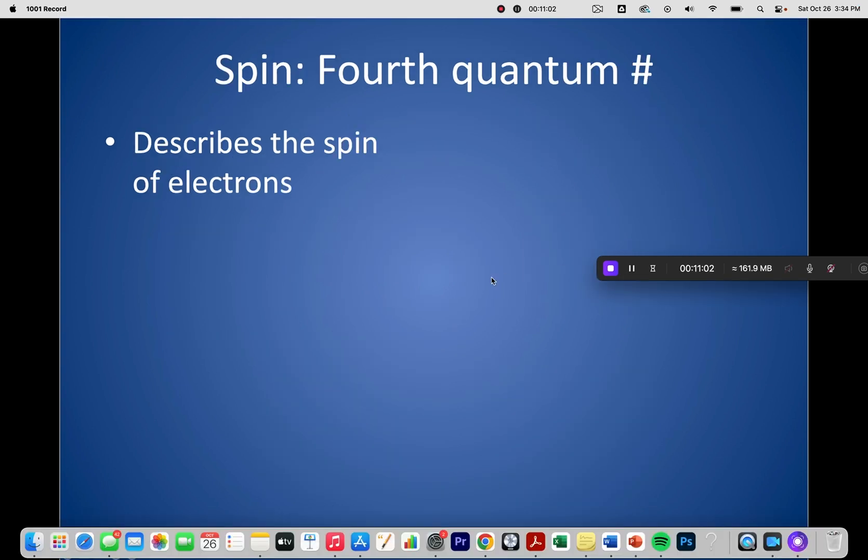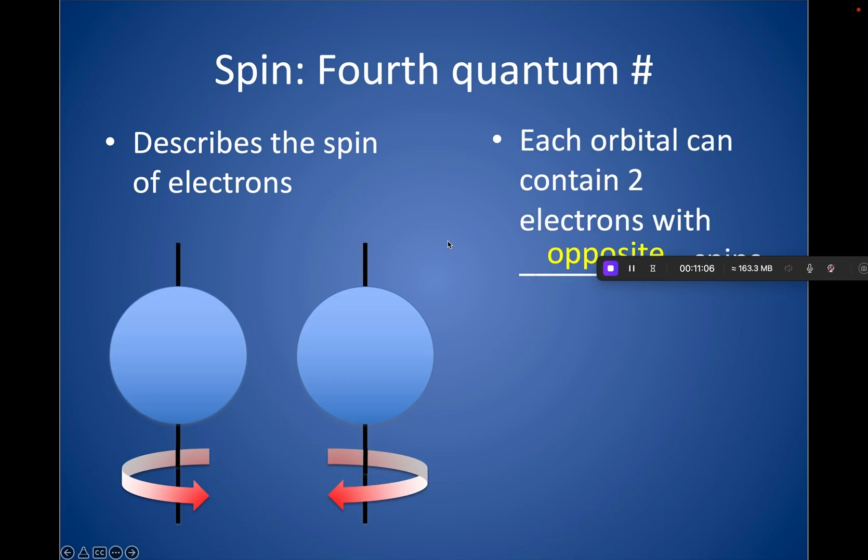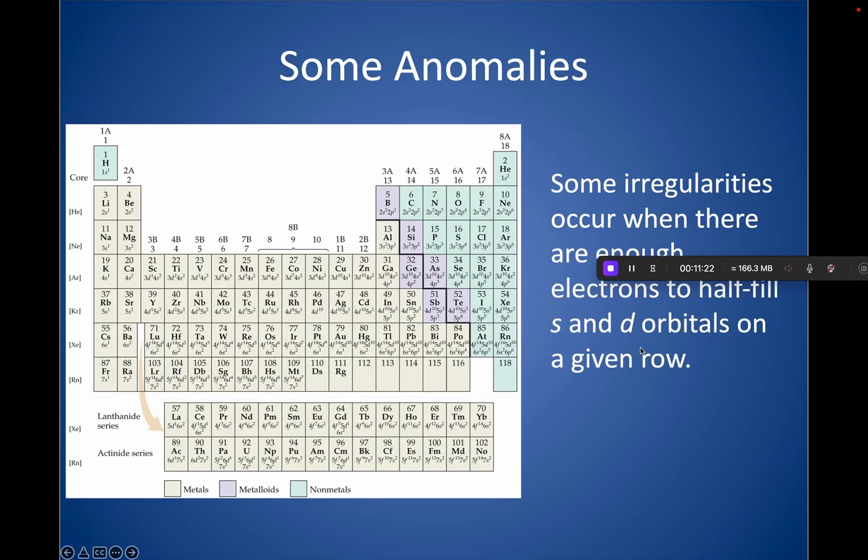The fourth quantum number describes the spin. And all you really need to know about this is that, again, each orbital contains two electrons and they have to have opposite spins. So if one's spinning clockwise, the other has to spin counterclockwise. And in our orbital notation, or orbital diagrams, or Aufbau diagrams, we show that by drawing one arrow up and one arrow down. And again, this is the Pauli exclusion principle.